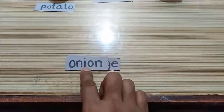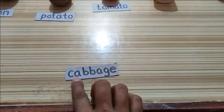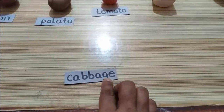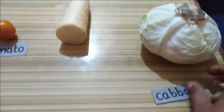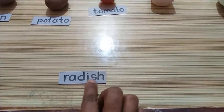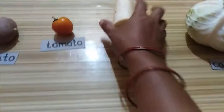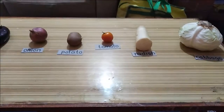O-N-I-O-N, onion, and here is onion. Next, C-A-B-B-A-G-E, cabbage, and here is cabbage. And the last one is R-A-D-I-S-H, radish, and here is the white radish. Okay, thank you.